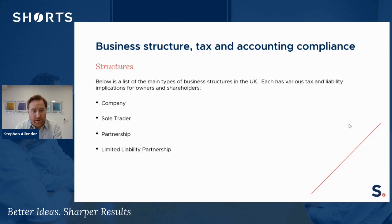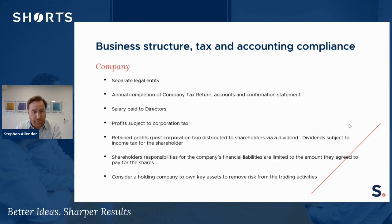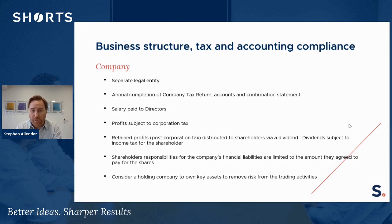The four options are: company, sole trader, partnership, and limited liability partnership. A company is a separate legal entity, so it will have to complete annual corporation tax returns, accounts, and confirmation statements submitted to Companies House. Any profits are subject to corporation tax, currently at 19%, and any retained profits after corporation tax, plus salaries paid to directors, are available to be distributed to shareholders via a dividend. That's effectively how business owners are remunerated — salary and dividends — and dividends are subject to income tax for the shareholder.